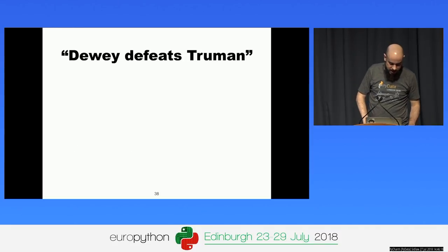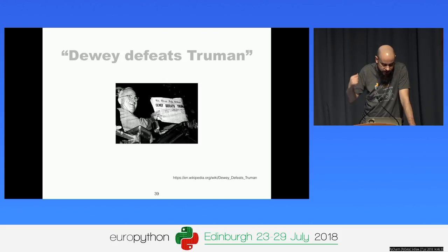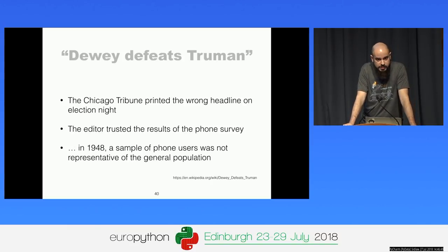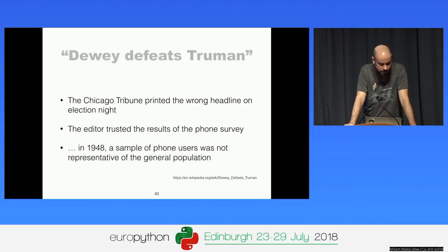A textbook example: 'Dewey Defeats Truman.' Truman became president in 1948 and is waving a newspaper with the wrong headline. What happened is a newspaper ran a phone survey asking who people would vote for. But remember, this is 1948 — not everybody has a phone. The people with phones who were readers of the Chicago Tribune were all Republicans essentially, voting for Dewey. So the survey was clearly biased, therefore the wrong headline.